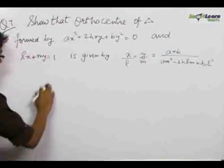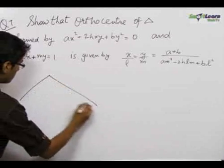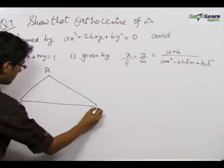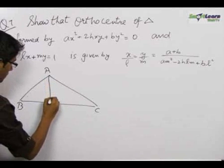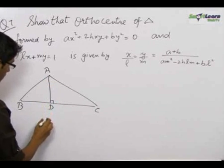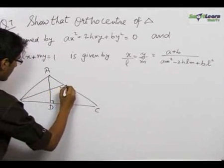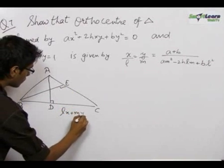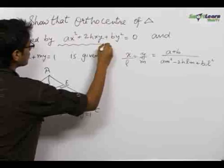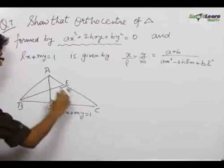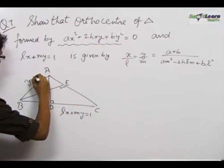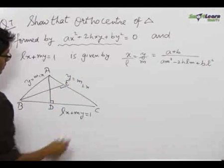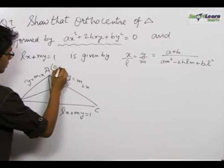In order to proceed with this problem, let us first make the triangle. Let us say the vertices are A, B, and C. This is perpendicular AD and this is the altitude BE. BC is given by Lx plus My equals 1. Let us say Ax square plus 2Hxy plus By square equals 0 represents the lines y equals m1x and y equals m2x. So clearly our point A becomes 0,0.